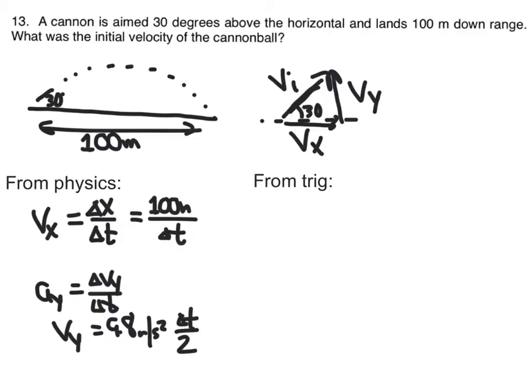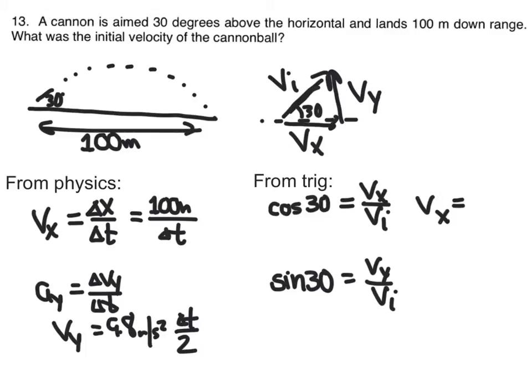From trig, we can look at this Vx and Vy in terms of sine and cosine. So we can look at cosine of 30 degrees. We know that's adjacent over hypotenuse, so that's Vx over Vi. We can also look at sine of 30 degrees, which is going to be Vy over Vi. That's going to give us two equations. So our Vx here is Vi times cosine 30, and Vy is Vi sine of 30.